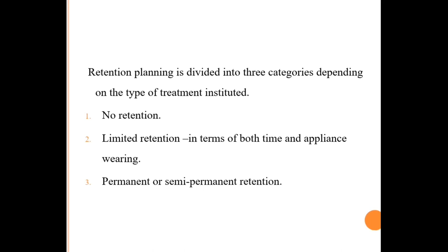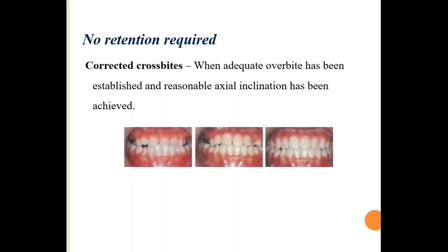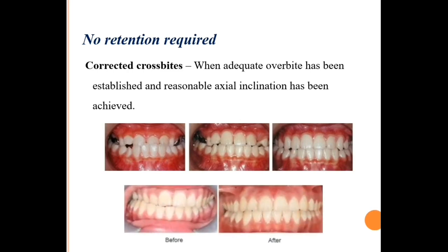The first category — cases that require no retention. The best examples are corrected crossbites. When adequate overbite has been established and reasonable axial inclination has been achieved in crossbite cases, you no longer need any particular retentive measures. For example, in anterior crossbite after correction, the positive overbite is enough to hold the lower incisors in position. Similarly, in posterior crossbite, after achieving perfect cusp-fossa relationships, no particular retentive measures are needed.